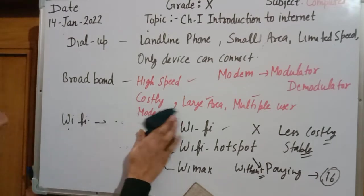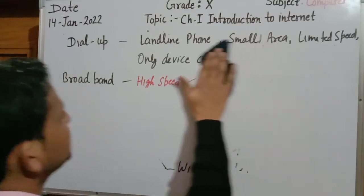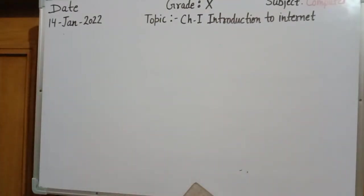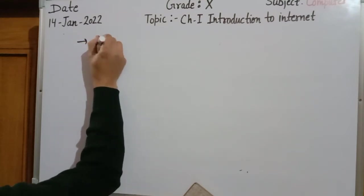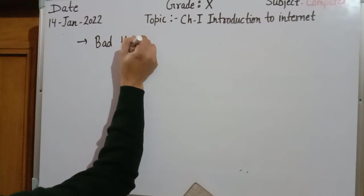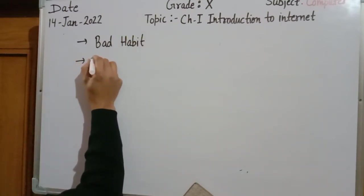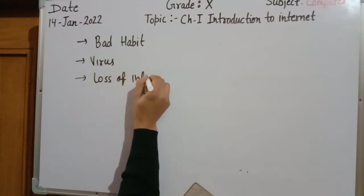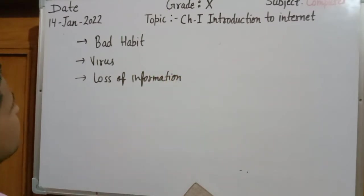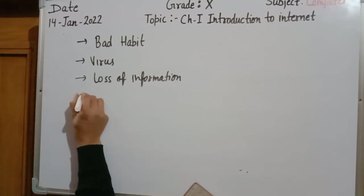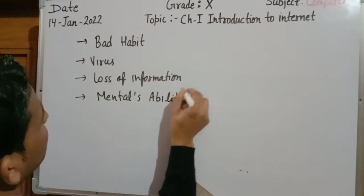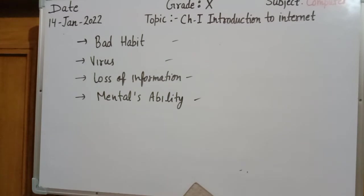What are the advantages and disadvantages of internet? Internet can be used anywhere, in any area, in any field — like business, research, education, and entertainment. However, there are also disadvantages. First, excessive use is a bad habit and a major disadvantage. Second, chances of virus infection are more. Third, there are greater chances of loss of information from hackers. Additionally, excessive use can spoil your mental ability.